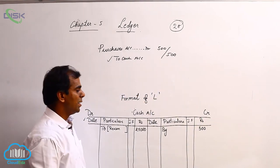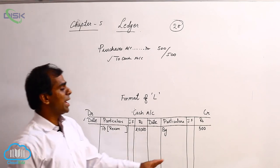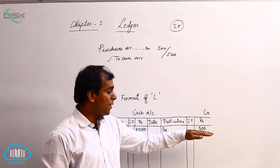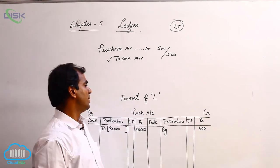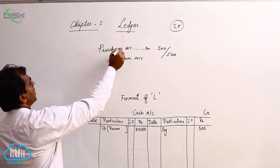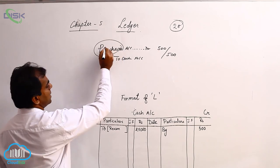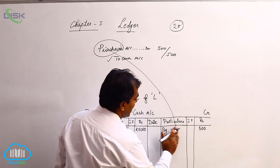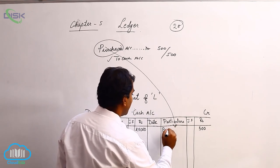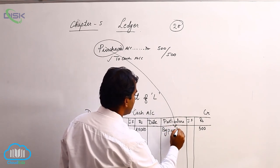because against cash, 500 is there in the journal entry. Now, why I am writing this 500 on the credit side, the reason I have to state. The reason is purchases. So, I will say, 'by purchases.'